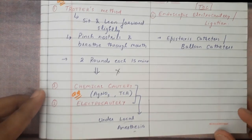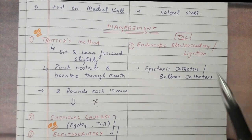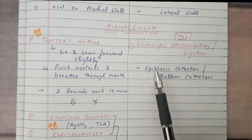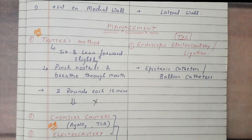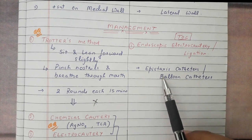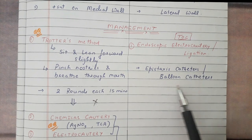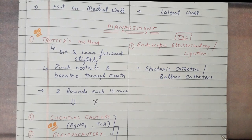For posterior epistaxis, the treatment of choice is endoscopic electrocautery or ligation. Additionally, epistaxis catheters or balloon catheters can be used as treatment options.